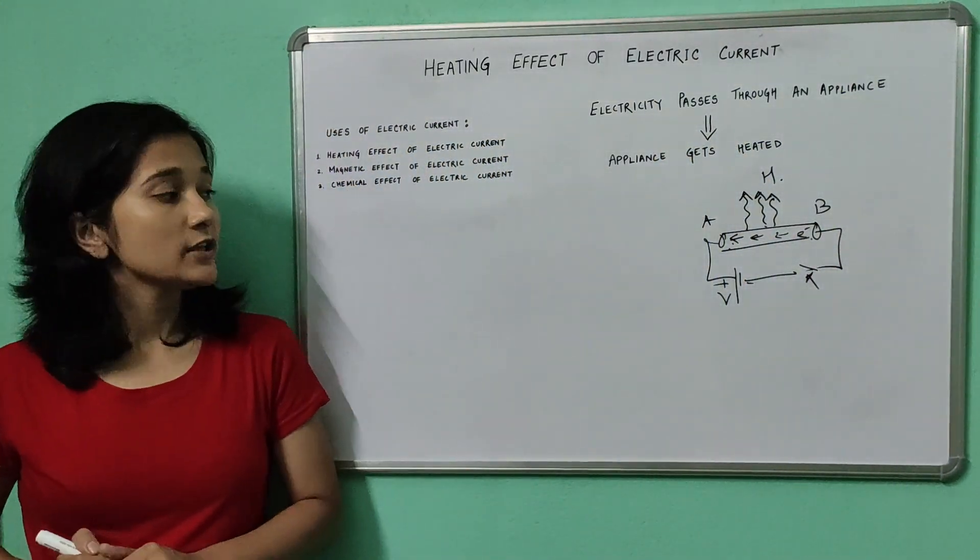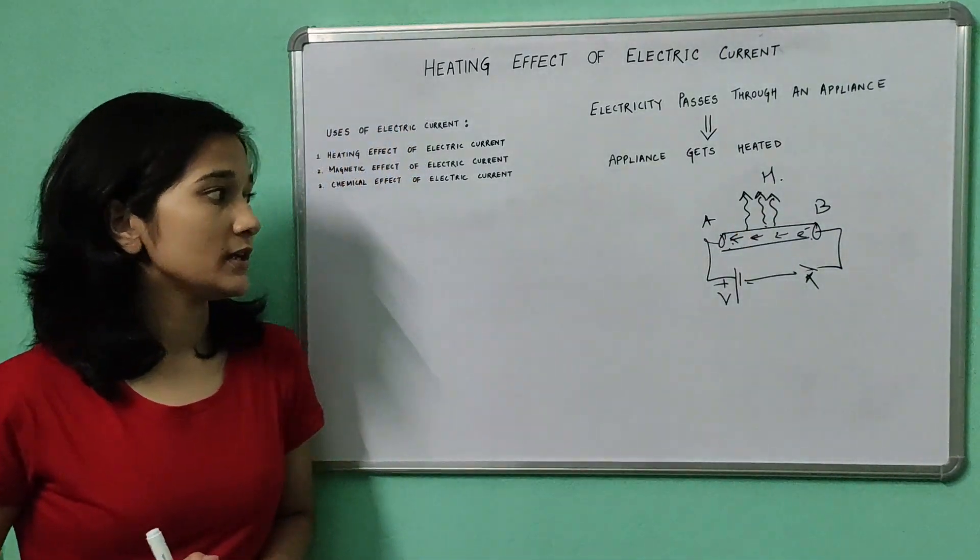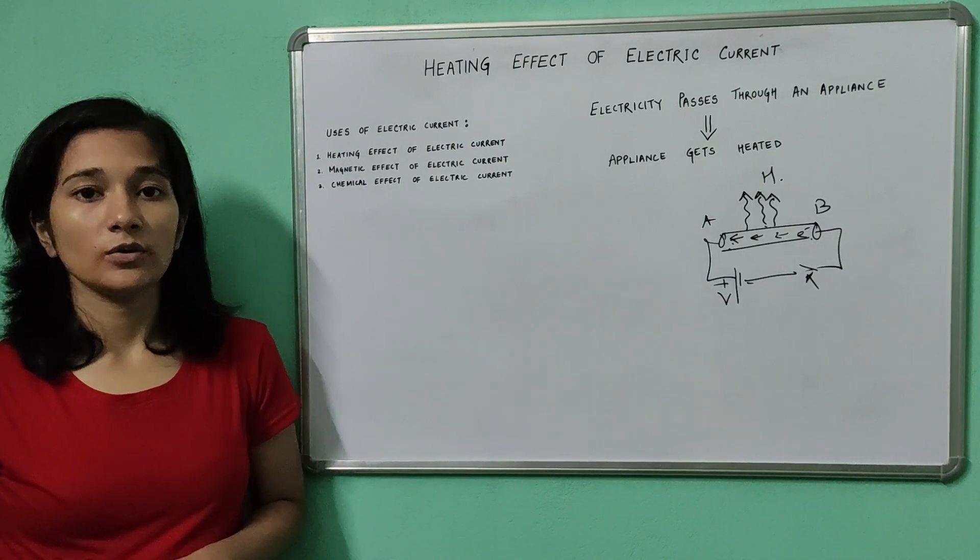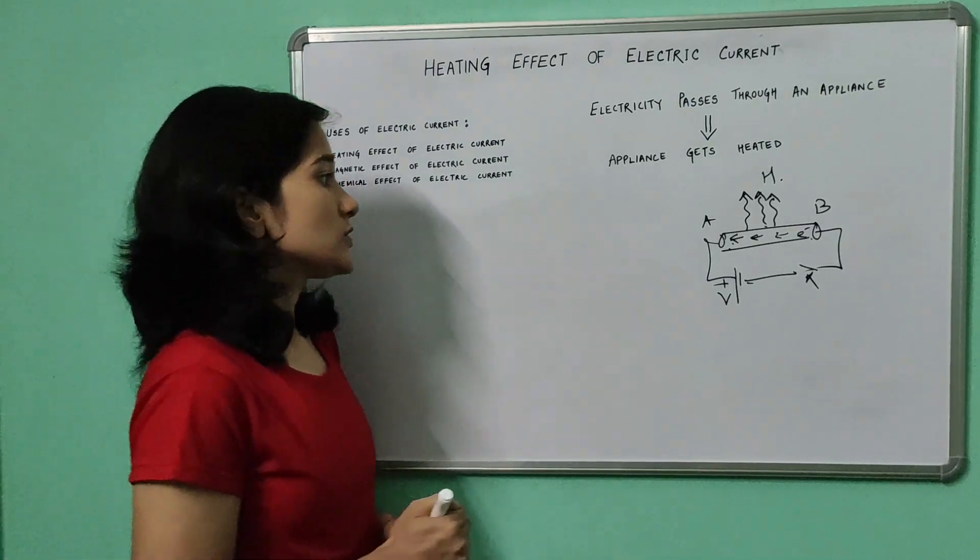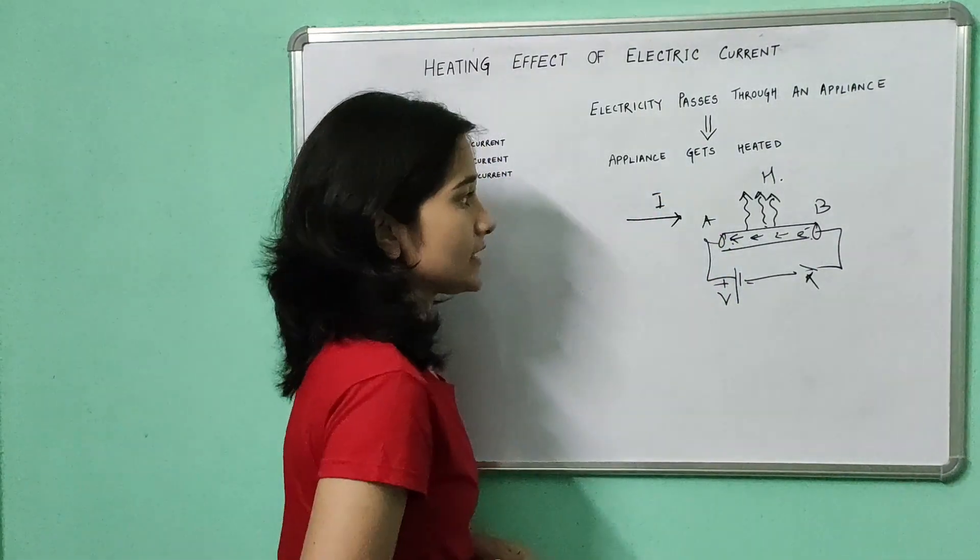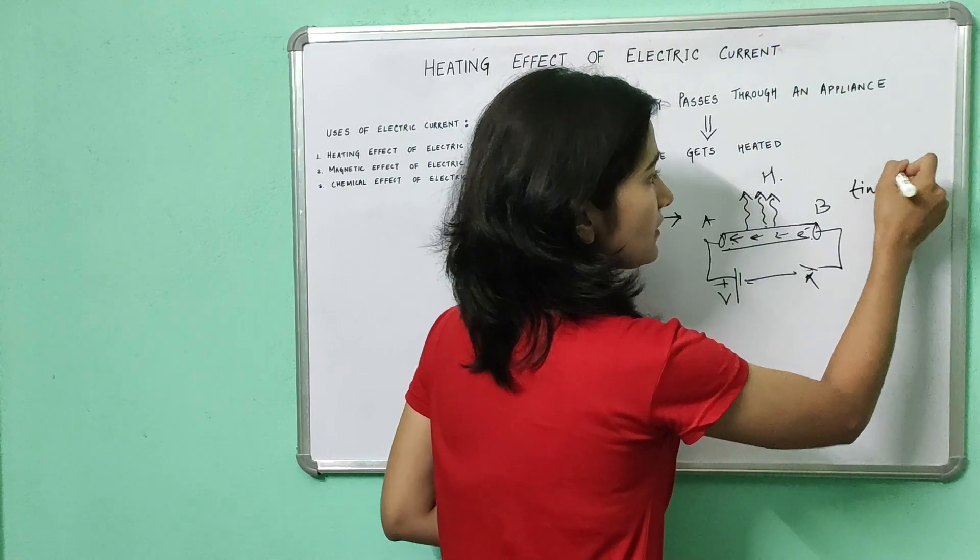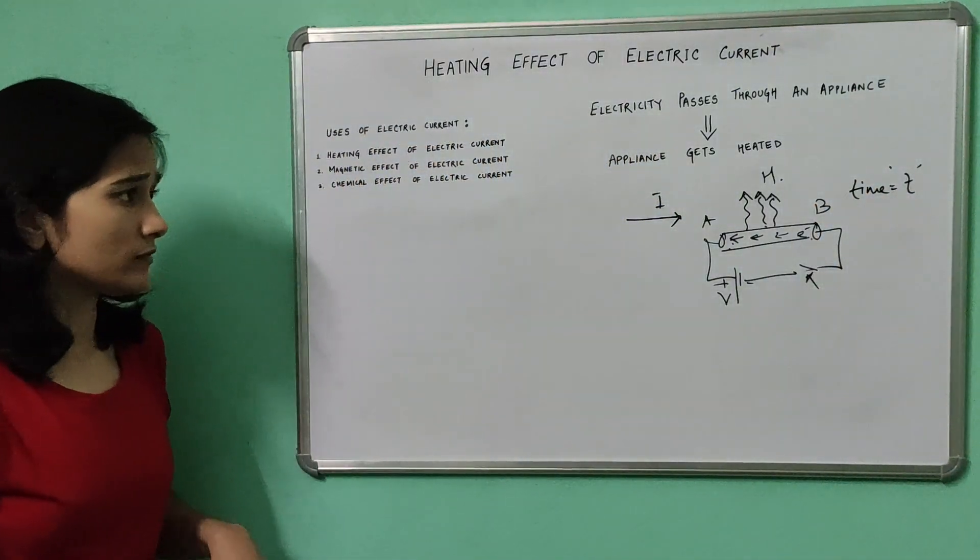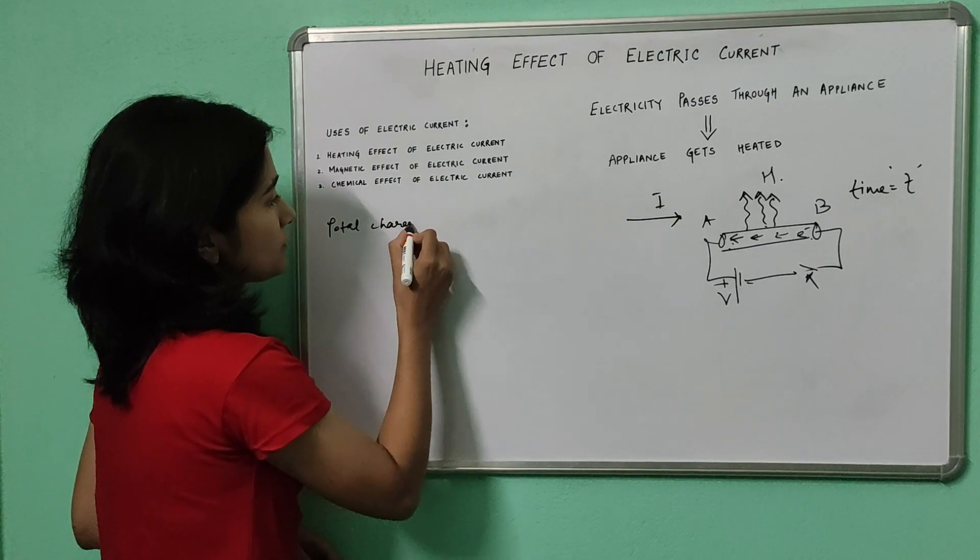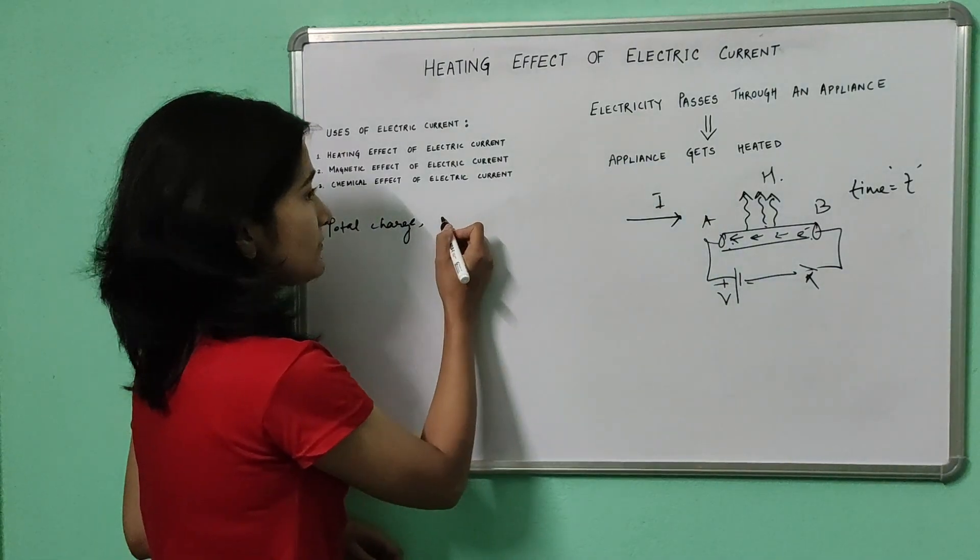So now we have to find the mathematical expression for this amount of heat liberated by the conductor or any kind of appliance like a fan or a bulb. For that, let us assume the current flowing through the conductor is capital I and it flows for a time given by small t. First of all, we have to find the total amount of charge which is flowing through the conductor in the small amount of time t.